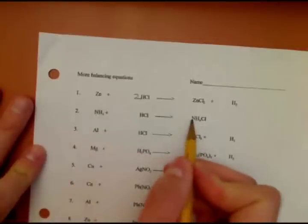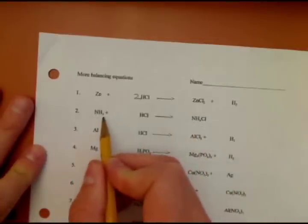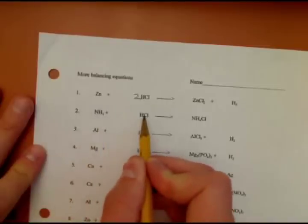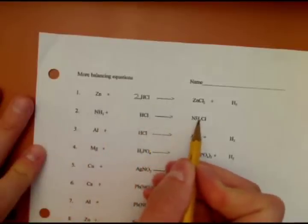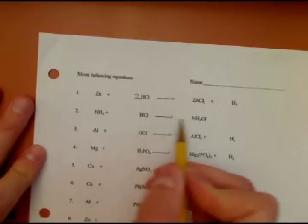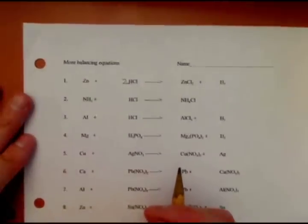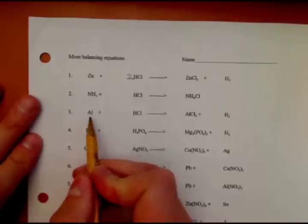Alright, let's look at this one. One nitrogen, one nitrogen. You probably can't see but that's a 3 right there, so three plus one hydrogen is four. Four hydrogen, one chlorine, one chlorine. That one's already balanced. Don't do anything to it.